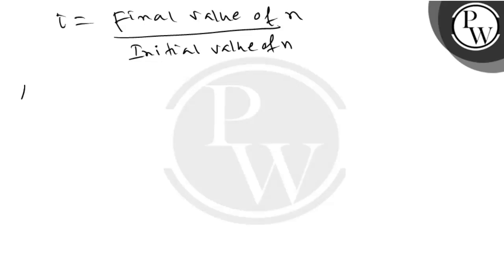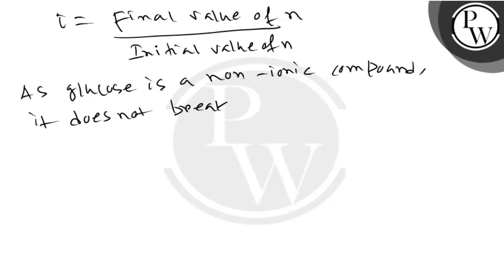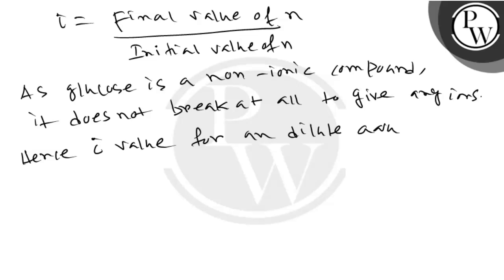As glucose is a non-ionic compound, it does not break at all into ions. Hence, i value for a dilute aqueous solution of glucose is 1.